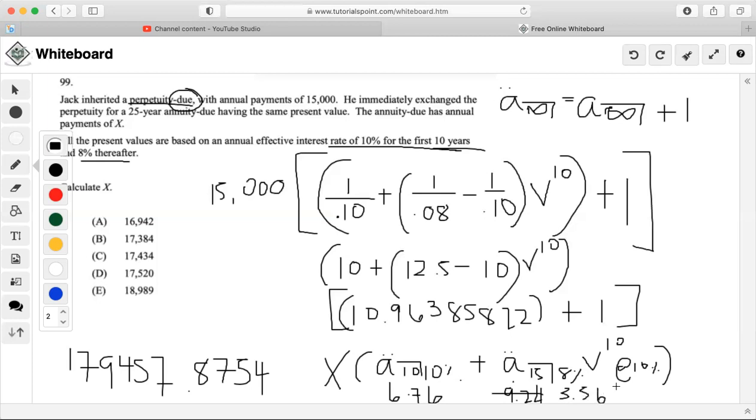Now I'm going to add this back to 6.76 and get 10.3224 times X. Now I'm going to set this equal to what I got from the previous, and I'm going to solve for X by dividing 179,457.754 divided by 10.3224, and I'm going to get 17,385.28.